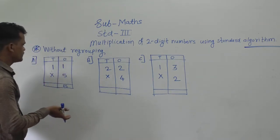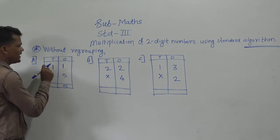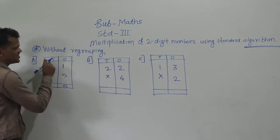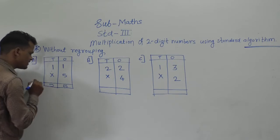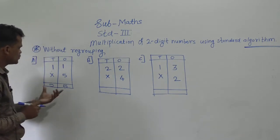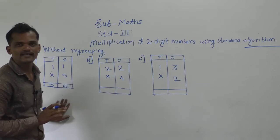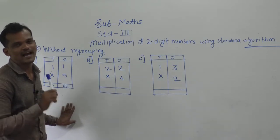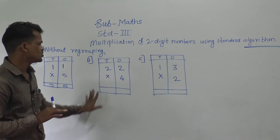Then the next step is to multiply the tens place digit. 5 ones are 5 — write that product here. So, 55 comes as the product. Product means the answer or the result of the multiplication.